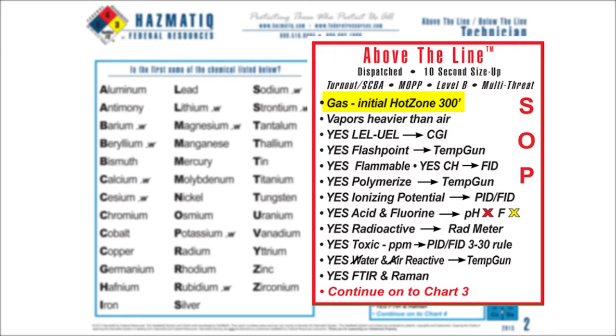That gas vapors are heavier than air. That gas has an LEL, a UEL, a flashpoint — which makes it flammable.